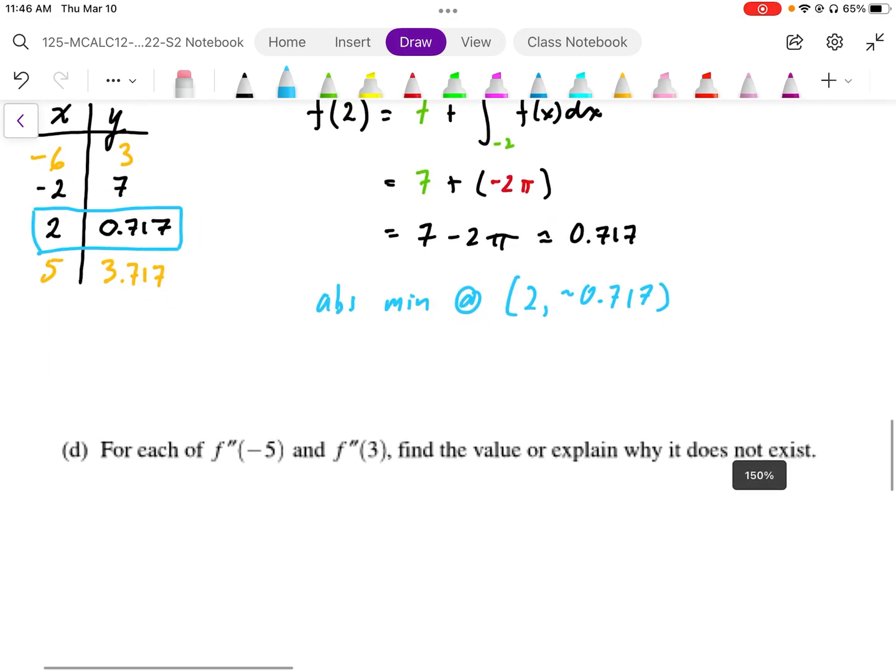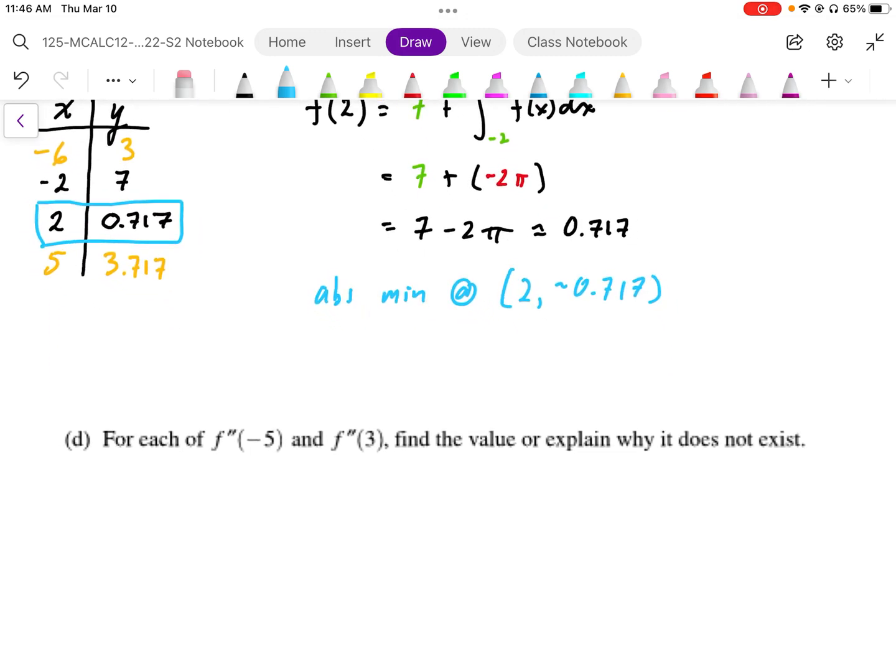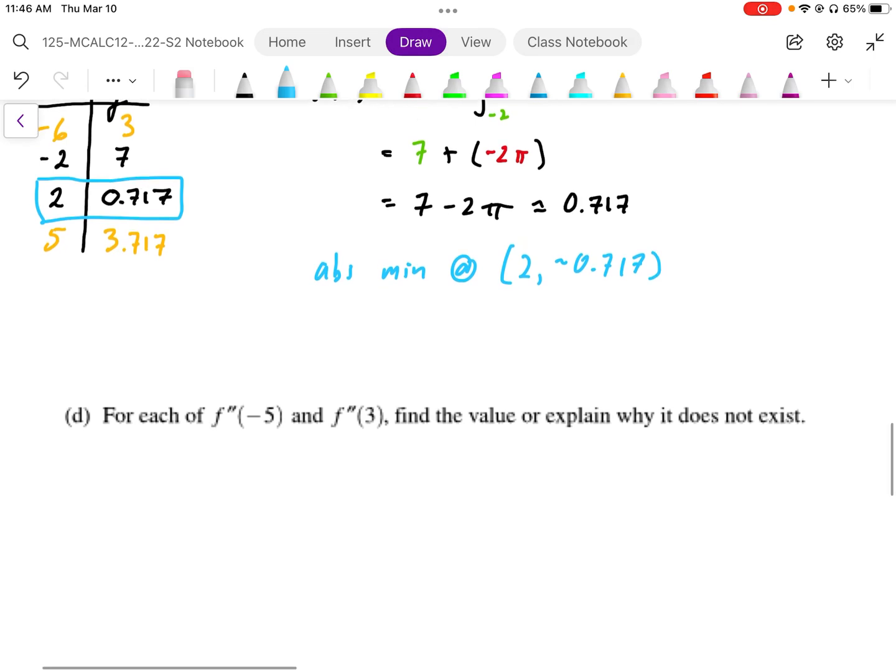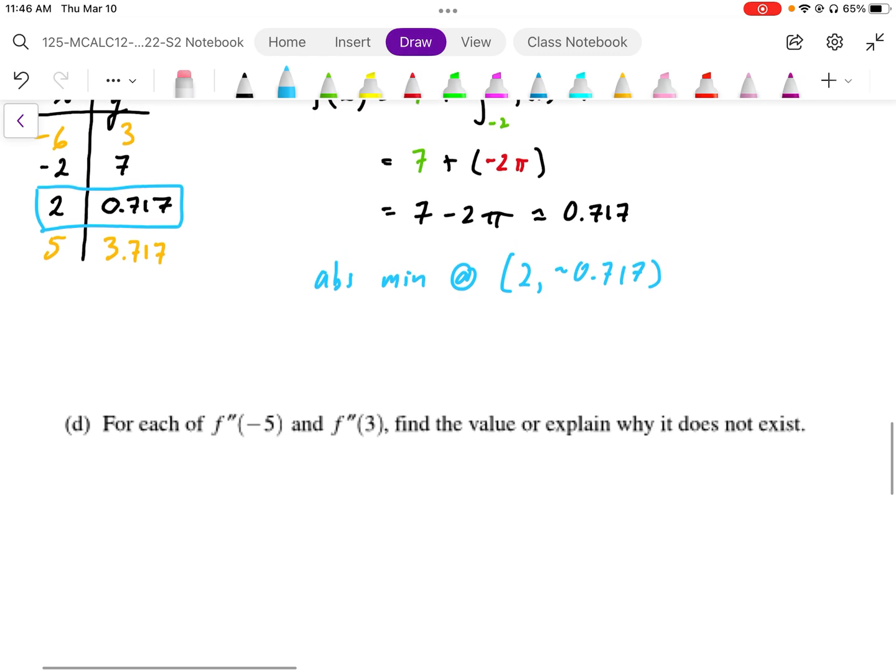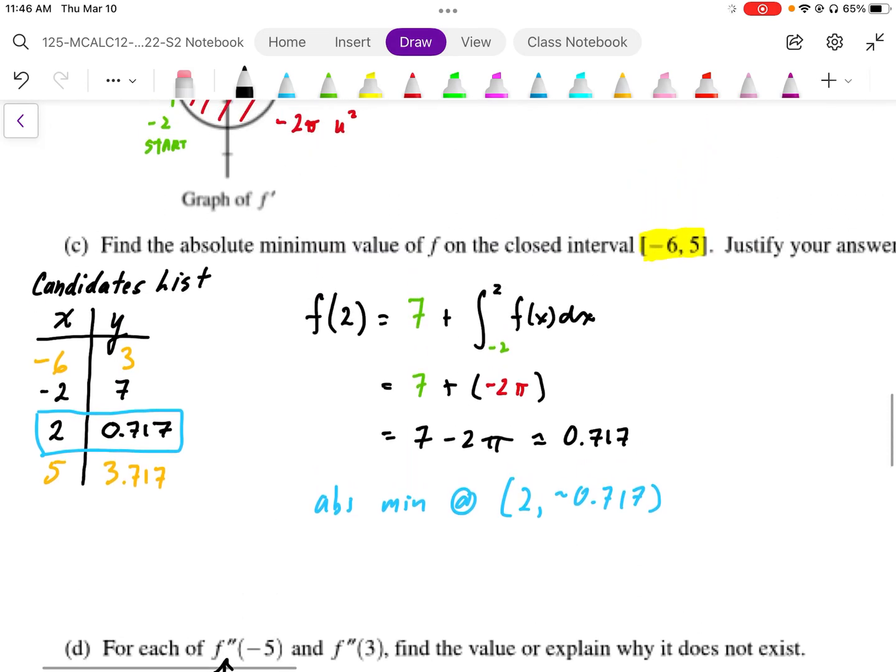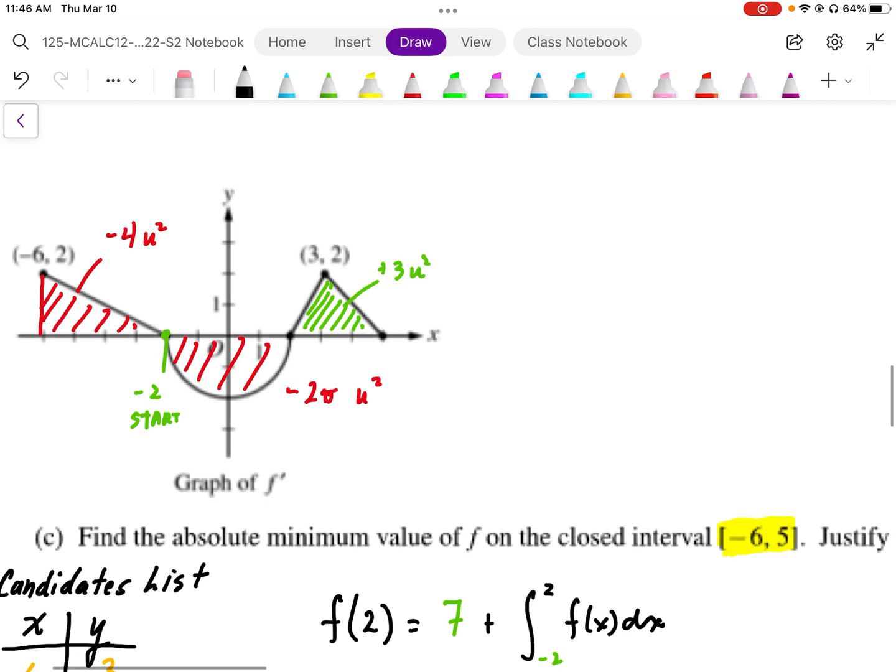Part D says, for F double prime of negative 5 and positive 3, find the value or explain why it does not exist. When we talk about the second derivative, this means a slope on F prime.